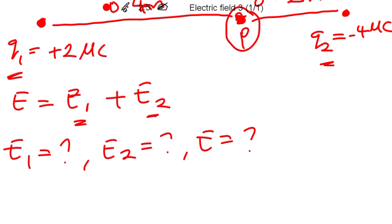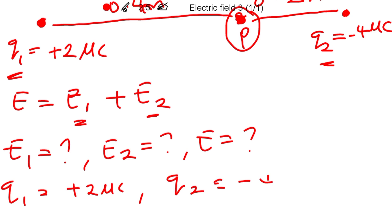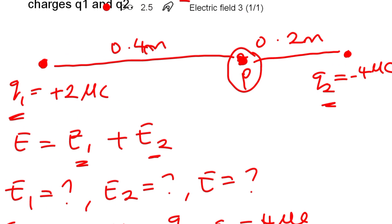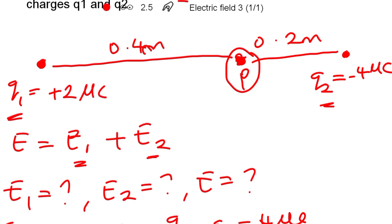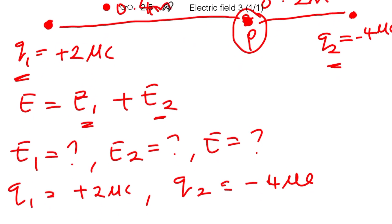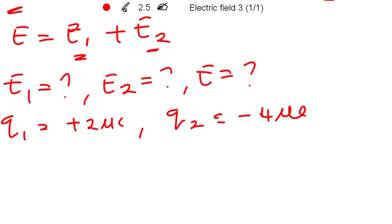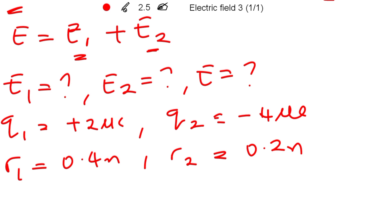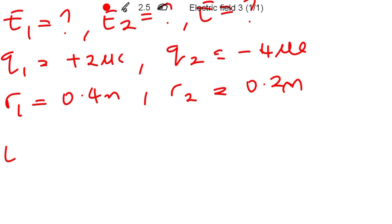We are given q1 equal to positive two microcoulombs and q2 equals negative four microcoulombs. The distance between q1 and point P is 0.4 meters, and that of q2 and point P is 0.2 meters. So r1 equals 0.4 meters and r2 equals 0.2 meters.